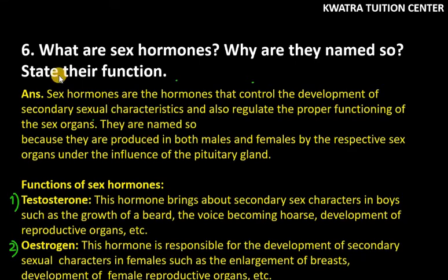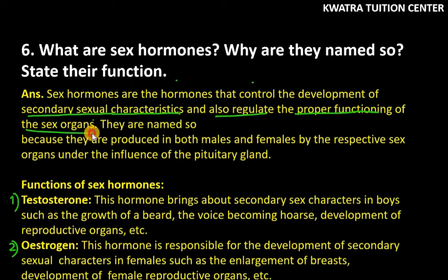So, first of all, you have to look at how many parts are divided. It is divided into 3 parts. Sex hormones' definition: hormones that control the development of secondary sexual characters in male and female respectively, they develop them by using sex hormones in our body. And they also regulate the proper functioning of the sex organs. If sex organs are properly functioning, it is because of sex hormones. If sex hormones are not released, there won't be any proper functioning of sex organs.